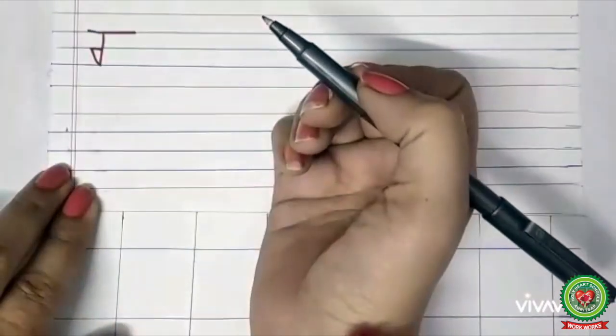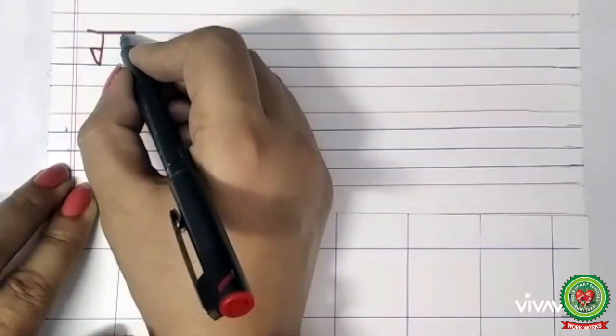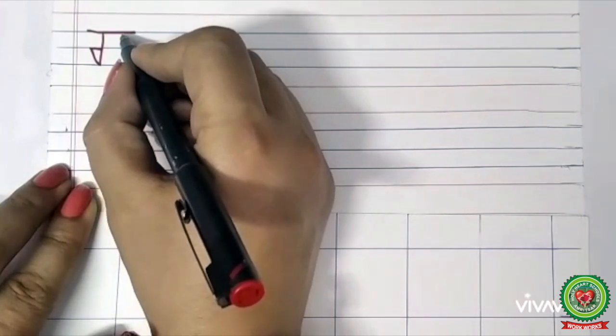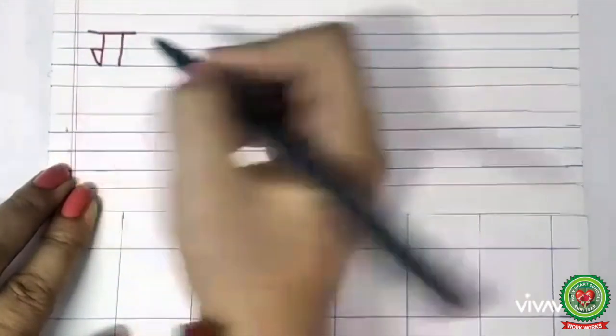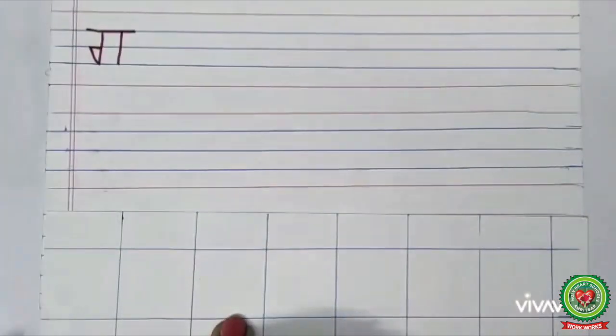Then now after leaving some gap here, I will draw a standing line like this. This is Gagga. Now come to this page.